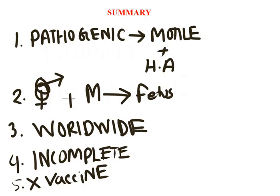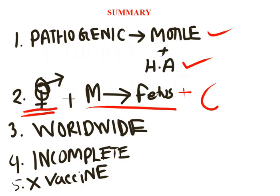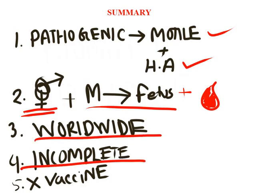To sum up, Tryponema pallidum is pathogenic because it is motile and it releases hyaluronidase. It is transmitted usually by sexual contact and transplacentally, and rarely by blood transmission. Syphilis occurs worldwide and its incidence is increasing. Immunity to syphilis is incomplete and there are no vaccines available.